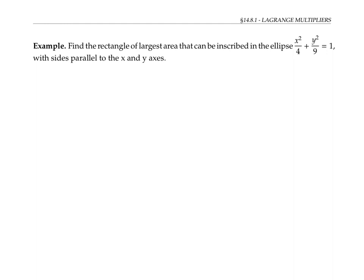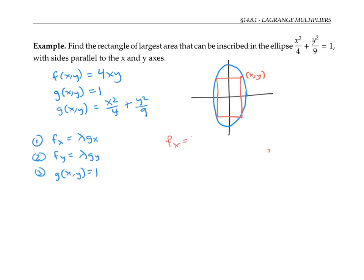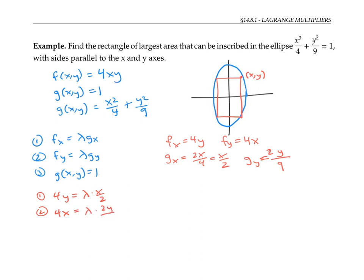Let's get back to our original example. Our maximization function for area was f(x, y) = 4xy, and our constraint condition was g(x, y) = 1 where g(x, y) = x²/4 + y²/9. We set up the three equations: F_x = 4y, F_y = 4x, G_x = x/2, and G_y = 2y/9. So our three equations are: 4y = λ(x/2), 4x = λ(2y/9), and x²/4 + y²/9 = 1.